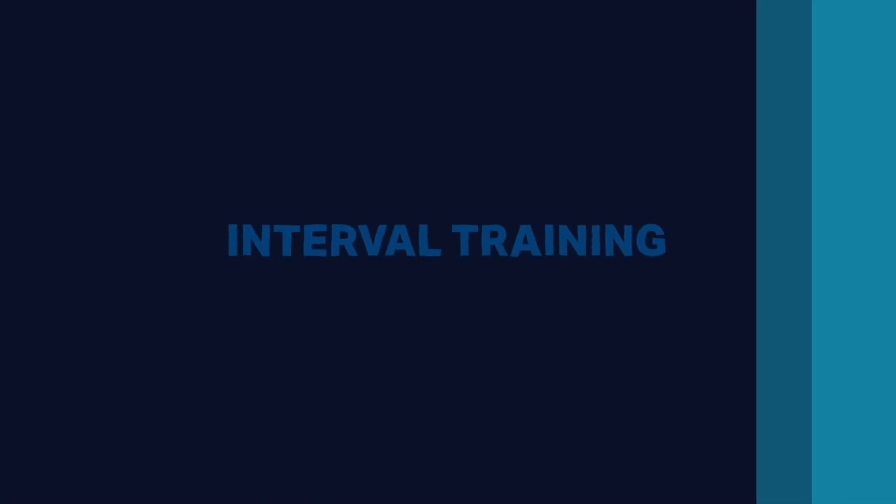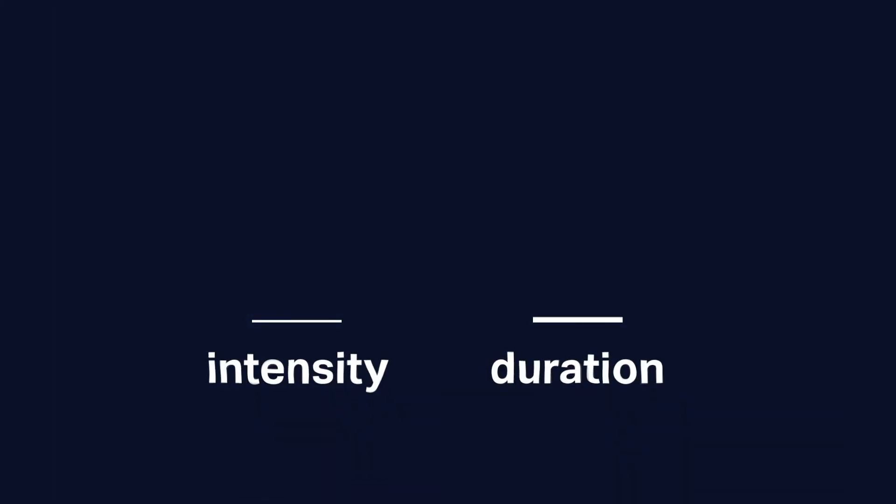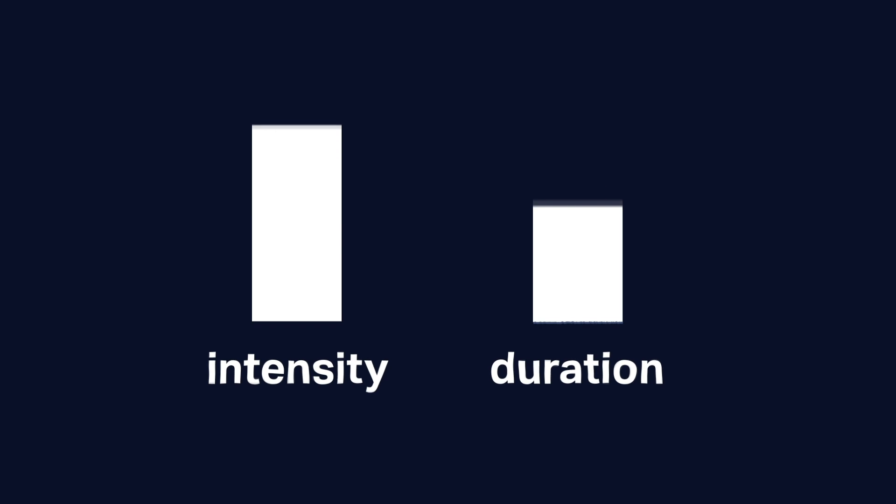The next option, option number two is interval training. Interval training does appear to be superior to steady state cardio in the sense that you need to do less of it. And you can get a higher effect from it. And so what is the exercise prescription for interval training? Well, the number of days per week goes from three to five down to three, but here's the deal. You trade ease or intensity for duration. So you can do a lower duration, but it has to be at a higher intensity. So what's the intensity?